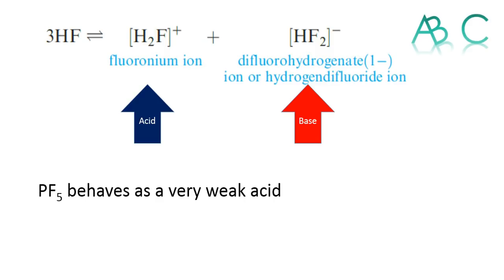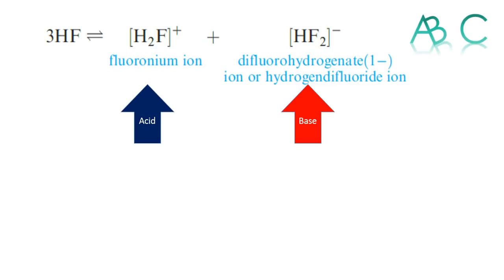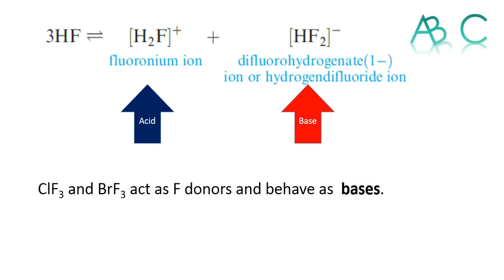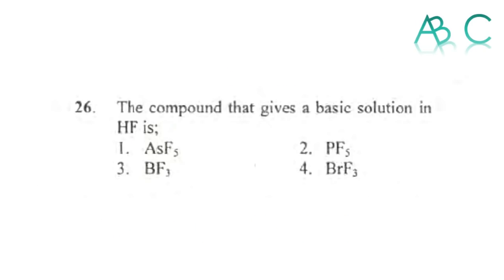BF5 behaves as a very weak acid according to its equation, but it forms the fluoride ion. BRF3, however, forms the hydrogen difluoride ion as shown in the equation, meaning it is actually acting as a base. So options 1, 2, and 3 form acidic solutions, whereas option 4, BRF3, forms a basic solution. Therefore, the answer is option 4.